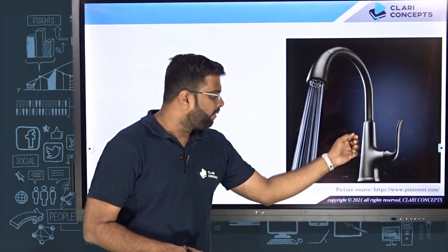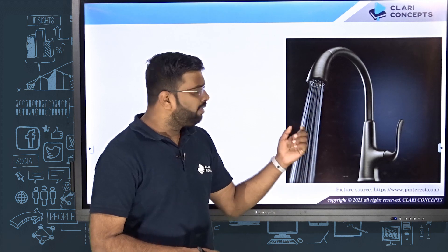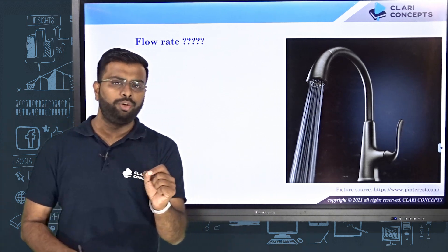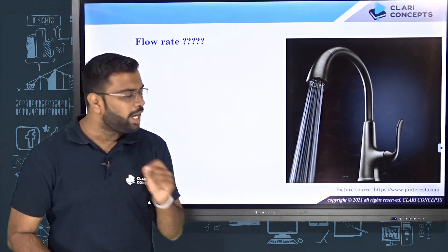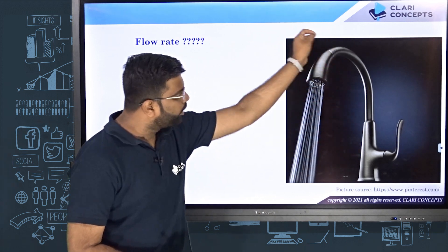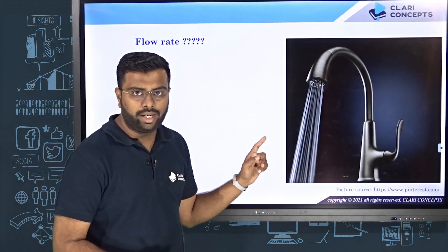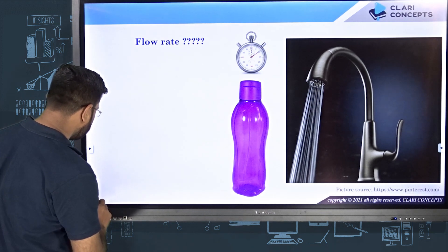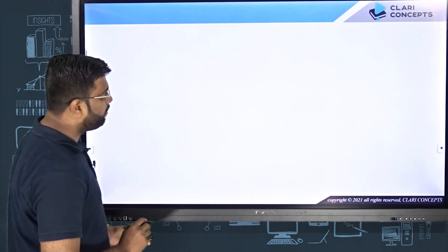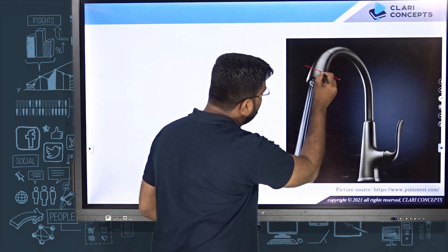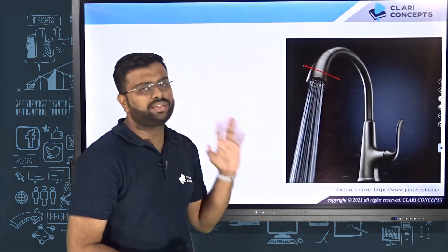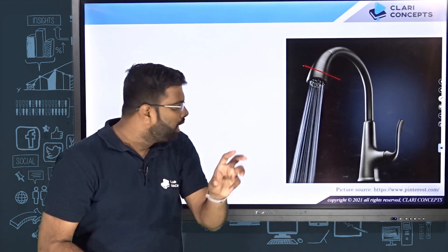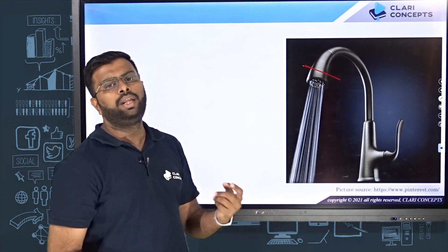Let's say you have a tap at your house and when you open it, water starts flowing out. If I ask you to measure the flow rate of that water, how do you do it? Flow rate is basically the amount of fluid crossing any section of the pipe per second — in other words, the amount of water coming out of this tap every second.